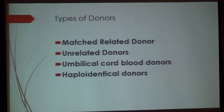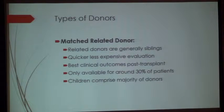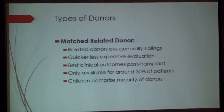The types of donors include matched related donors, unrelated donors whether fully matched or one locus mismatch, umbilical cord blood donors, and haploidentical donors. Matched related donors are usually siblings and offer quicker, less expensive evaluation and the best clinical outcomes post-transplant. However, they are only available for around 30% of patients, and children comprise the majority of these donors in our work.